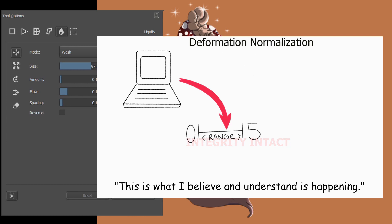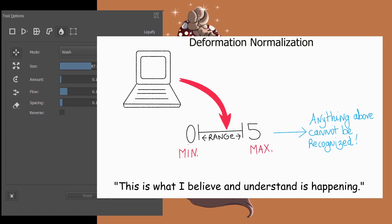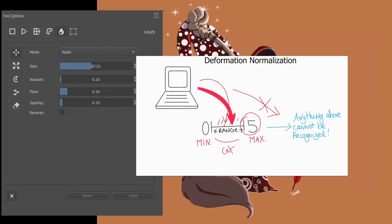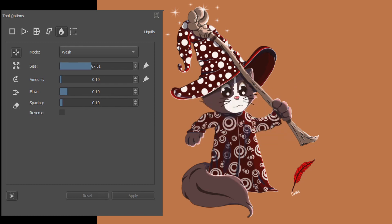It is going to do so within a range. Let's imagine that zero represents no deformation and five is the maximum limit the software will go before the image loses its integrity and becomes distorted beyond recognition. As you deform your image, Krita is going to keep working within the range and is never going to go over its maximum parameter. Whatever changes you make, you will always see that you are deforming a cat, even when getting close to the maximum limit. While earlier, when we reached the maximum point in build-up mode, nothing was left to recognize.